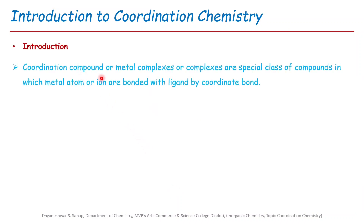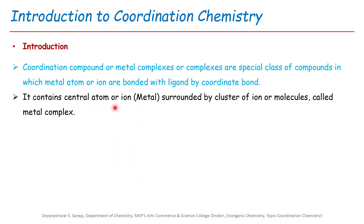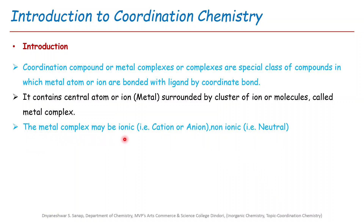Basically, coordination compounds, or metal complexes, are a special class of compounds in which the metal atom or ion is bonded with the ligands by a coordinate bond. Coordination compounds contain a central atom or ion — that is, a metal atom or ion — surrounded by a cluster of ions or molecules, called metal complexes. Metal complexes may be ionic — that is, cationic or anionic — or non-ionic, that is, neutral in nature. So there are three types of metal complexes: cationic, anionic, or neutral.